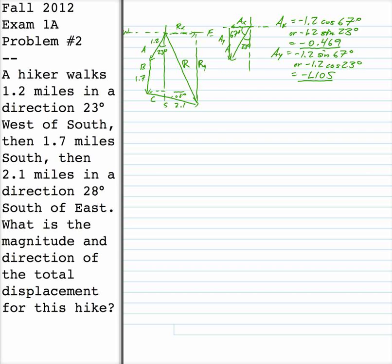The B vector, the second vector, points due south. The x-component is just 0, and the y-component points in the minus y direction and is minus 1.7.